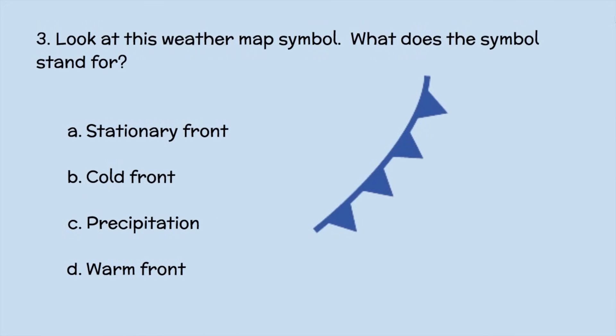Number three: Look at this weather map symbol. What does the symbol stand for? A — a stationary front? B — a cold front? C — precipitation? Or D — a warm front? If you said B, cold front, you are correct. Great job.